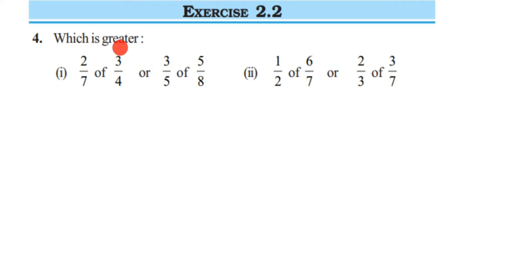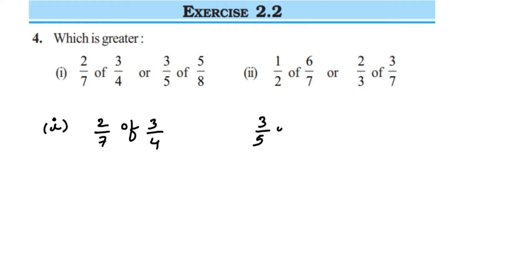Let's do the first question. We have 2/7 of 3/4 and the other number is 3/5 of 5/8. First we want to find out the values and then we're going to compare them.